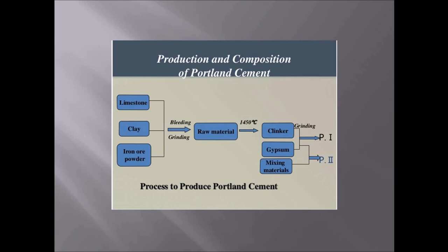In the wet process, the proportion of limestone and clay is taken to make a slurry. Blending of slurry to the correct composition is done. After that, the slurry is stored and fed to a rotary kiln, and the slurry is converted into clinker. The clinker is then ground in a ball mill with the addition of 2–3% gypsum, and cement is formed and taken to the packing plant.